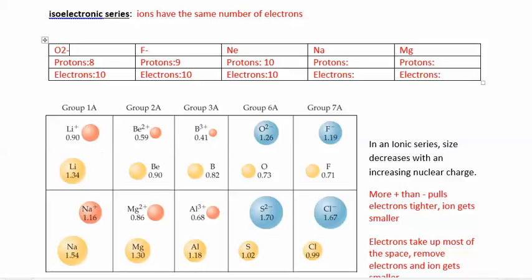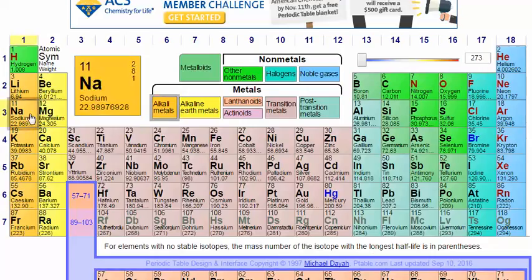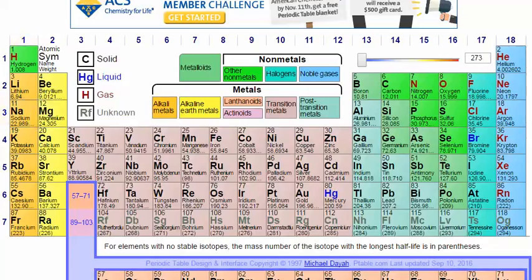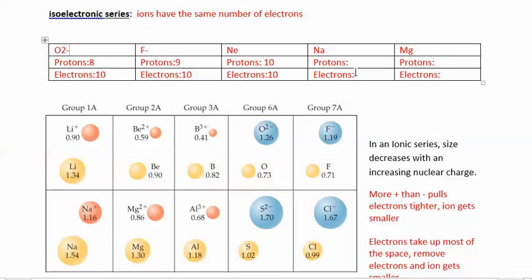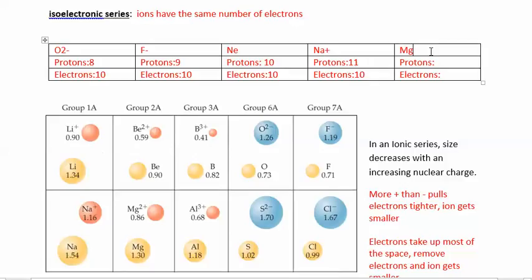If we look at sodium, it has 11 protons and 11 electrons. In order for it to be isoelectronic, it's going to lose an electron. If you lose something negative, you become more positive, so sodium will have a plus charge. And magnesium had 12 protons and 12 electrons — it's going to give up 2 and gain a plus 2 charge. So it will also be isoelectronic.